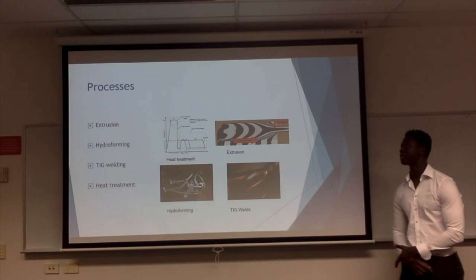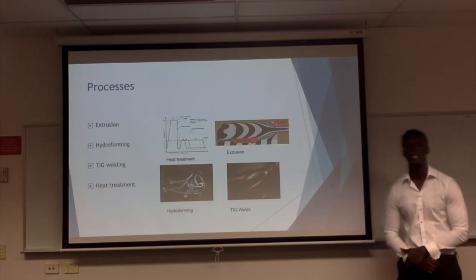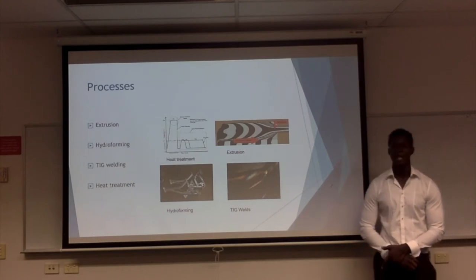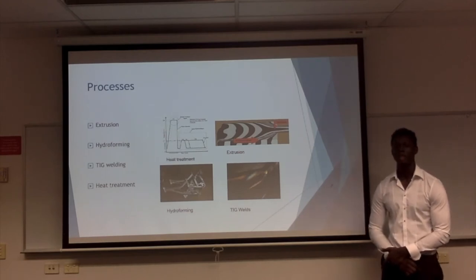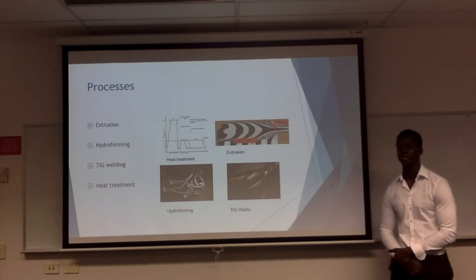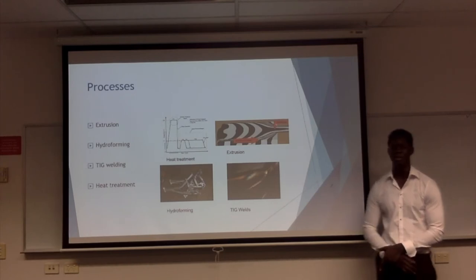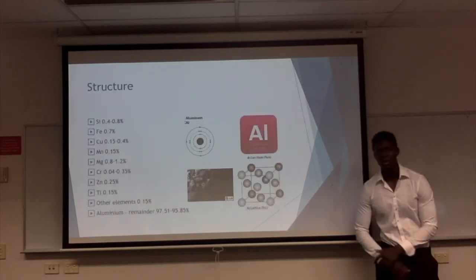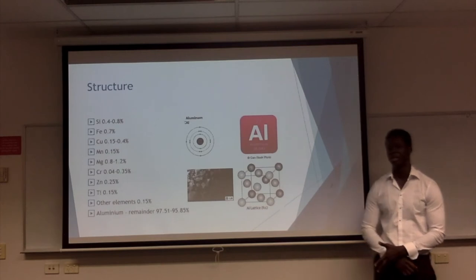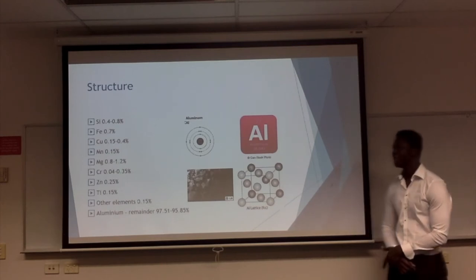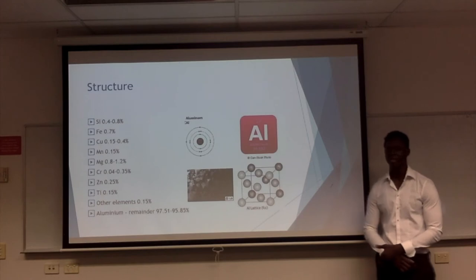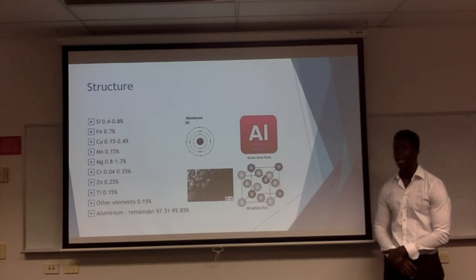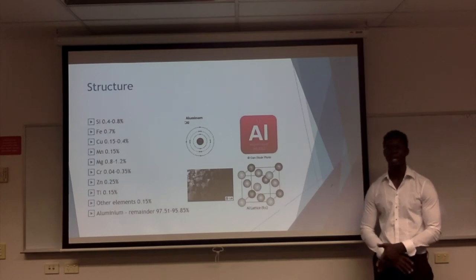Aluminium 6061 goes through a process of extrusion, hydroforming, and TIG welding, as well as a heat treatment. The heat treatment is important as it involves reheating at low temperatures followed by a solution treatment, which gives all its mechanical properties like strength, toughness, and so on. As mentioned, it includes magnesium, aluminium, and silicon. These additions give characteristics like grain refinement, high toughness, and ductility. It also has a face-centred cubic lattice.